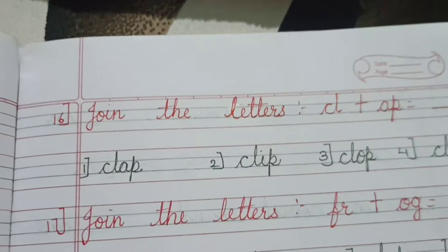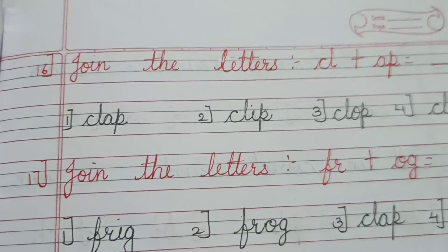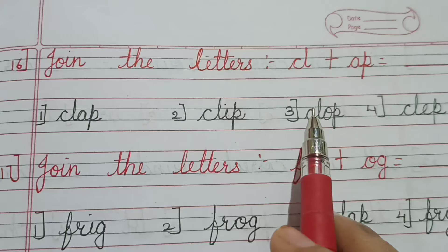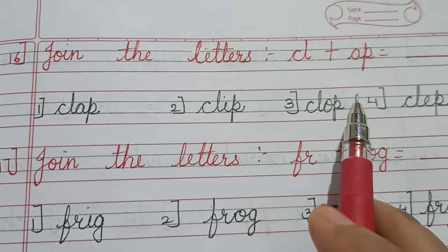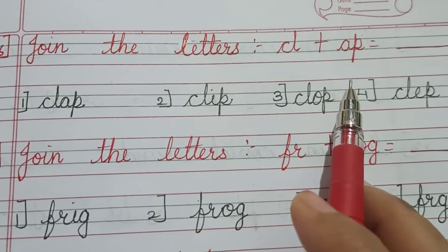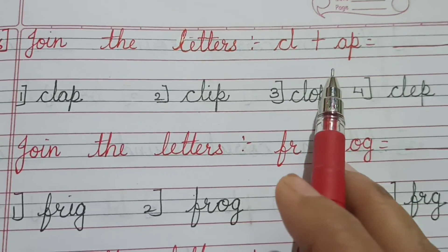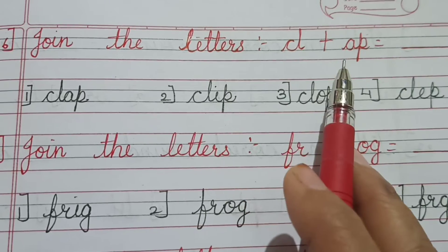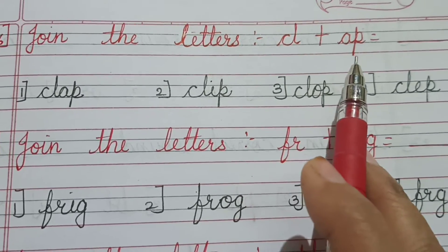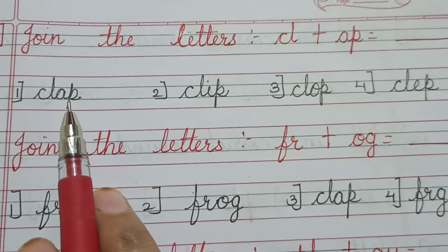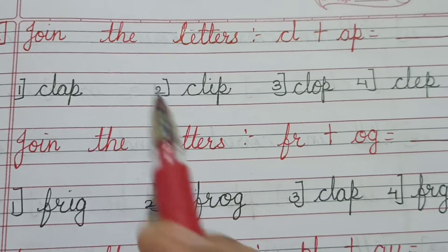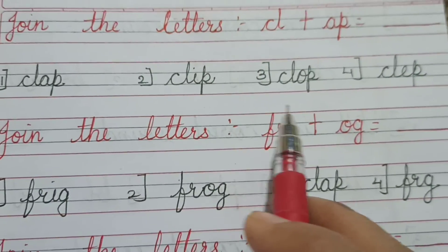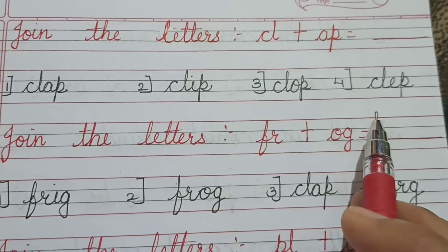Question number 16: join the letters CL plus AP. So what is CL plus AP? CL-AP becomes CLAP. Here I have given the options: clap, clip, clop, and clip. The correct answer is clap — CL-AP, clap.